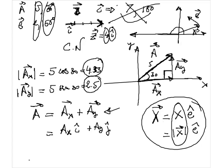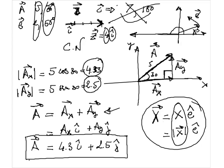So now I just need to fill in the values of AX and AY. My vector A is nothing but 4.3i plus 2.5j. This is what we call the component notation representation of vector A. I have decomposed my vector into two vectors: one along X, which is 4.3i, and one along Y, which is 2.5j.